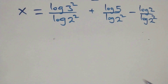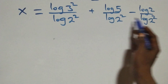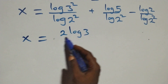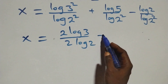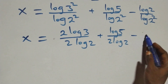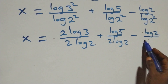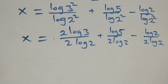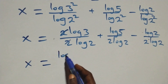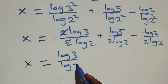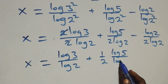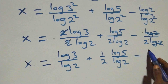Applying the power rule of logarithms, the 2's come out as coefficients: x equals 2 log 3 over 2 log 2, plus log 5 over 2 log 2, minus log 2 over 2 log 2. The 2's in the first term cancel, giving x equals log 3 over log 2, plus one-half times log 5 over log 2, minus one-half.